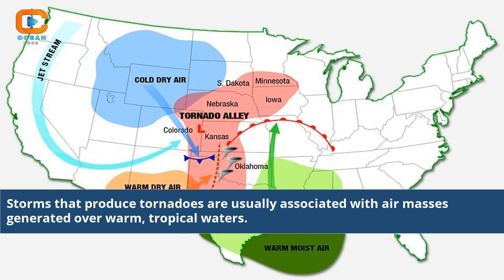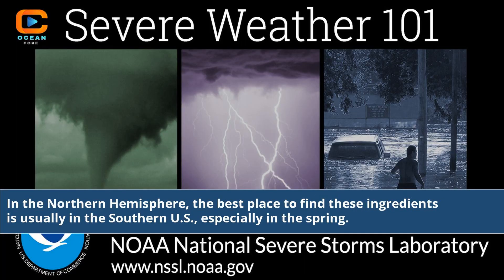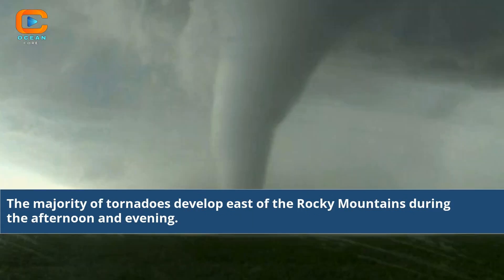Storms that produce tornadoes are usually associated with air masses generated over warm tropical waters. In the Northern Hemisphere, the best place to find these ingredients is usually in the southern U.S., especially in the spring. The majority of tornadoes develop east of the Rocky Mountains during the afternoon and evening.